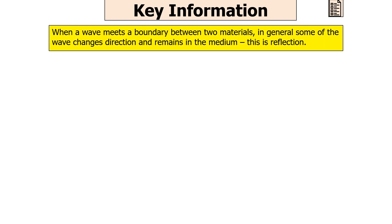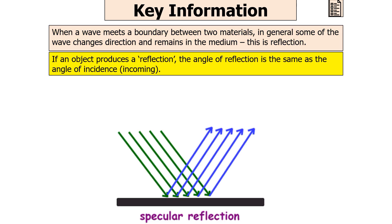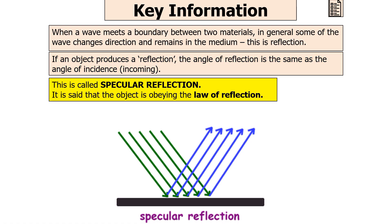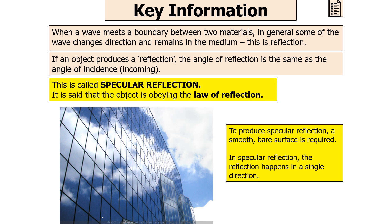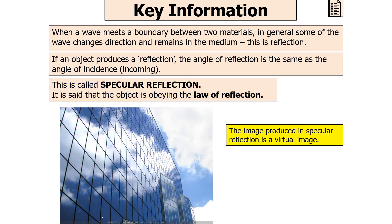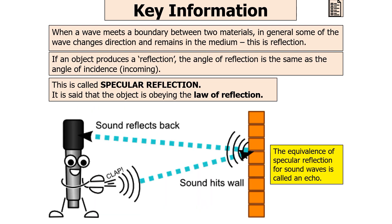When a wave meets a boundary between two materials, some of the wave changes direction and remains in the medium — this is reflection. If an object produces a reflection, the angle of reflection is the same as the angle of incidence. We call this specular reflection, and the object is said to be obeying the law of reflection. Specular reflection requires a smooth bare surface, such as glass. The reflection occurs in one single direction and produces a virtual image. The equivalent of specular reflection for sound waves is called an echo.